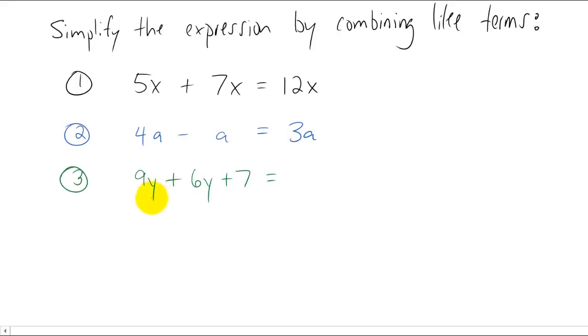What if you have the expression nine y plus six y plus seven? How would you combine like terms to simplify that expression? Well this is a bit trickier because you'll realize first that nine y and six y are like terms because they both have a y in them. However seven is not a like term with the nine y and the six y, so it can't be combined with these two.